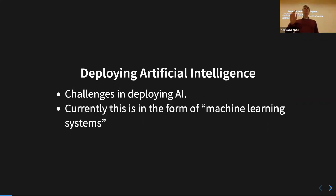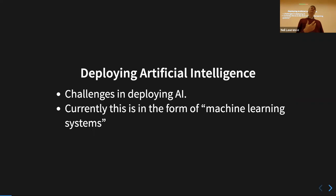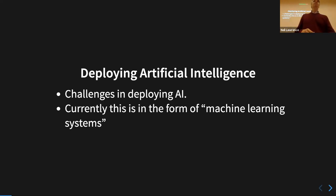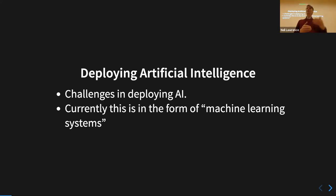This also leads into challenges related to deploying artificial intelligence. When people talk about AI systems as deployed today, what they really mean is a set of deployed machine learning components — often built by data scientists or learning from data that data science purified. For example, Amazon's buying system is arguably the world's largest AI system in terms of automated purchases per week, but it's mostly driven by machine learning components or operations research components based on data built by data scientists.